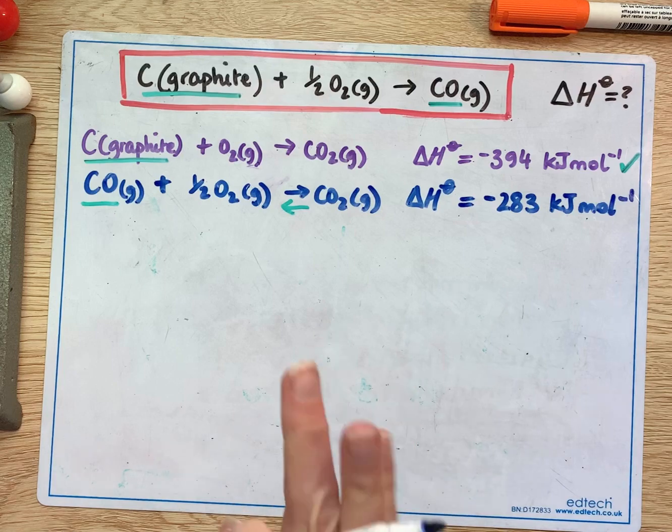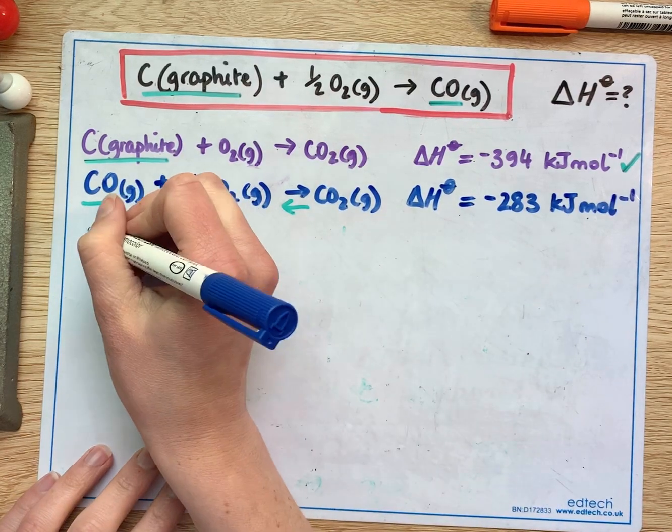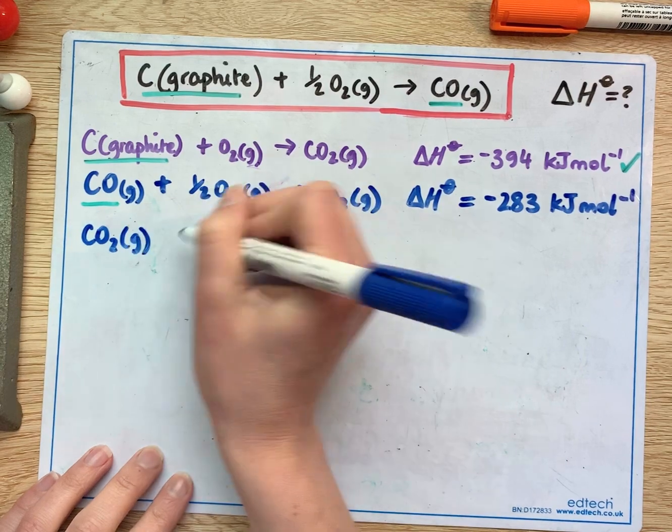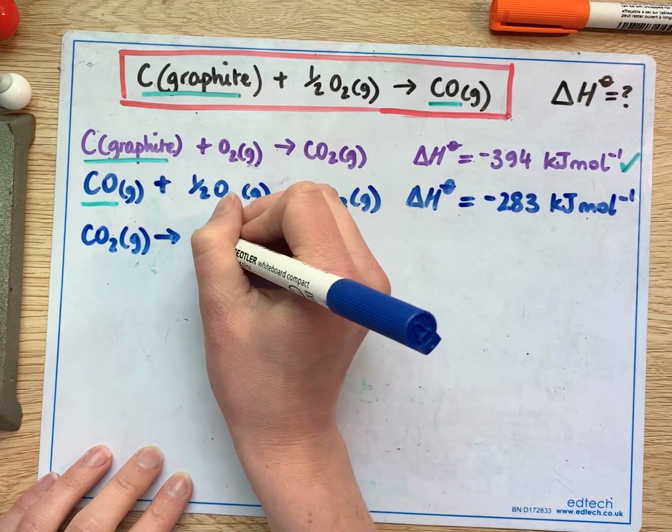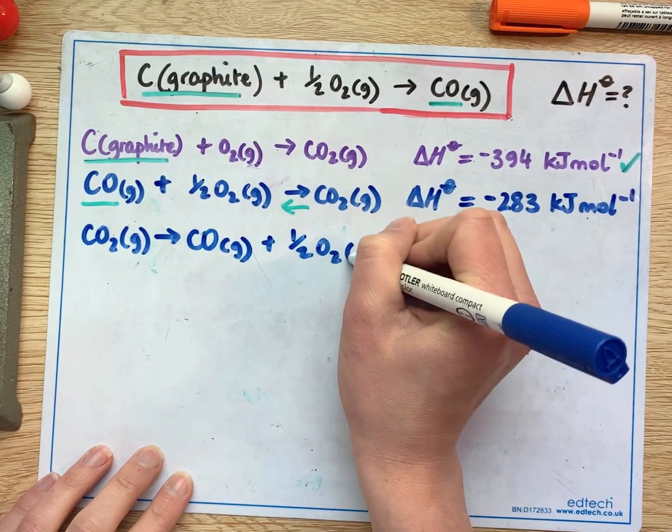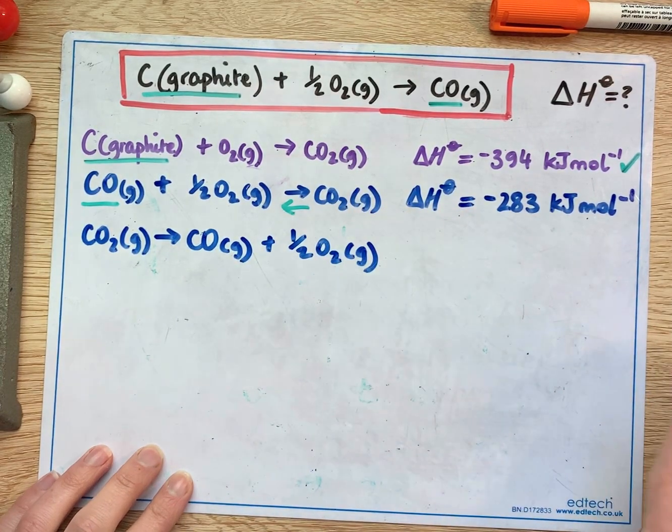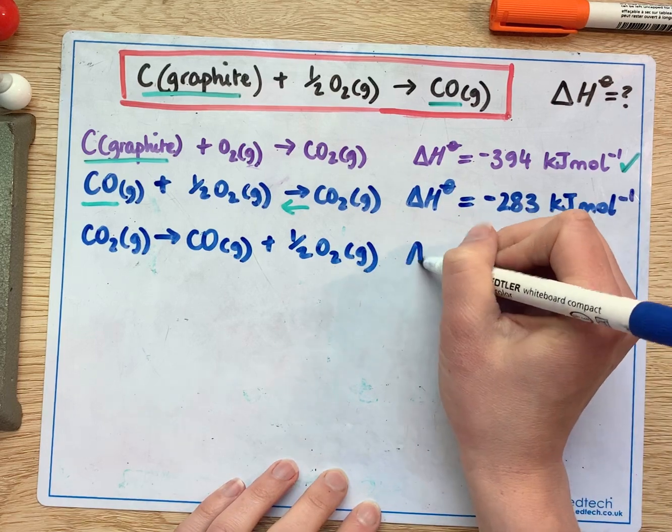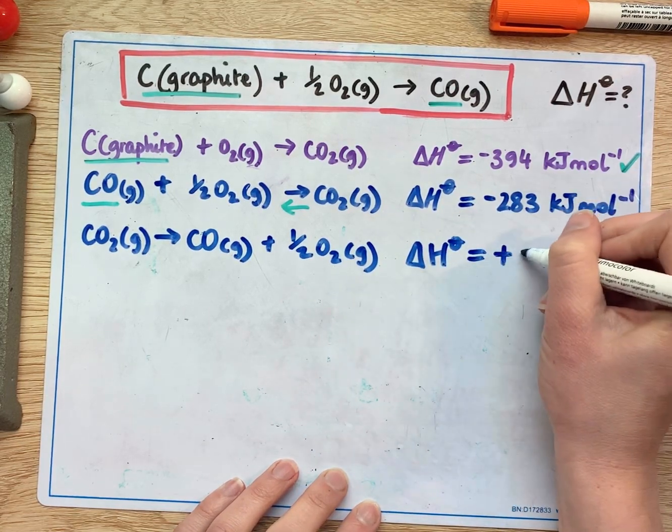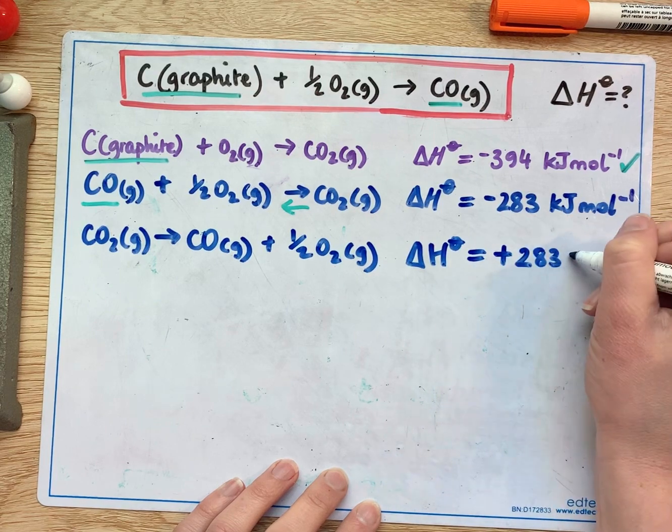If I write it out again I can write carbon dioxide can become carbon monoxide gas and oxygen gas and that would have an enthalpy change of positive 283 kilojoules per mole.